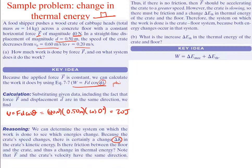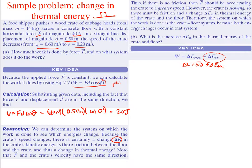The last part asks: what is the increase in thermal energy of the crate and the floor? We start with our equation for work, which is the change in mechanical energy plus the change in thermal energy. So we're adding on this change in thermal as well — this includes all the different types of energy. The change in mechanical is the change in kinetic plus the change in potential, plus the change in thermal, and that's equal to the work done.